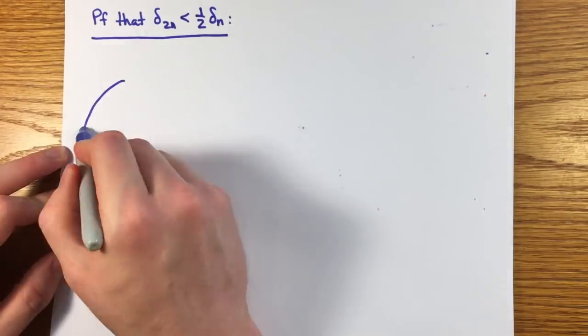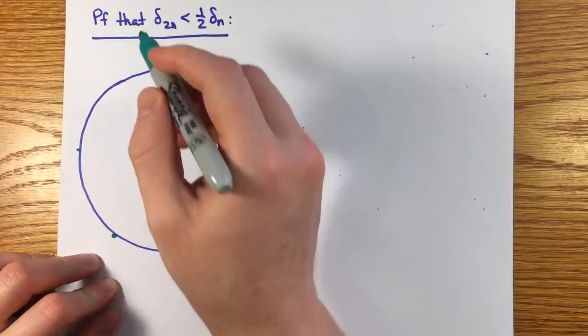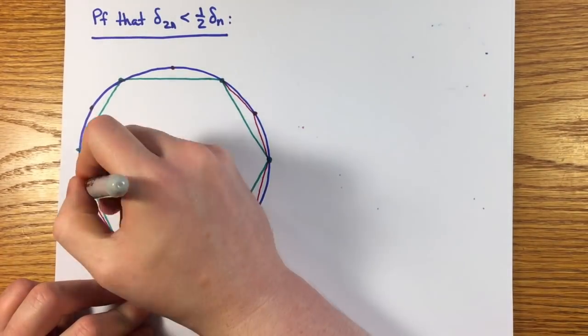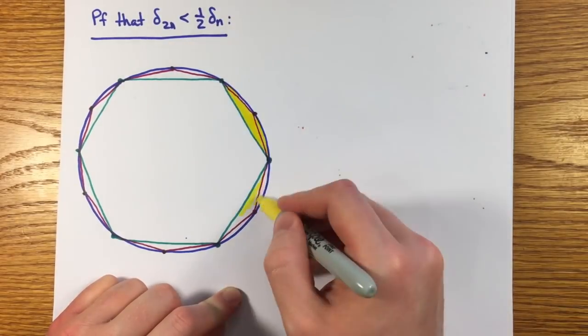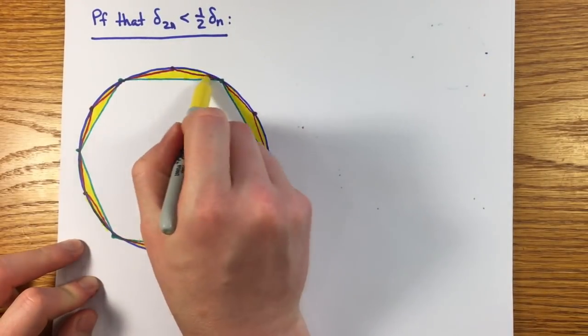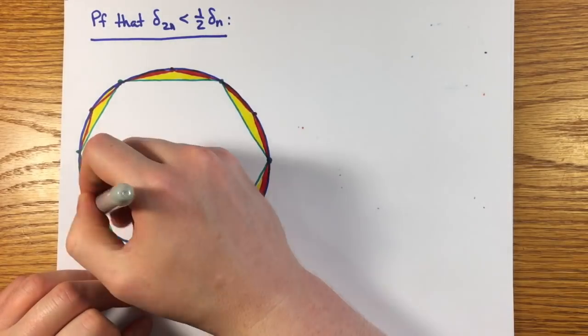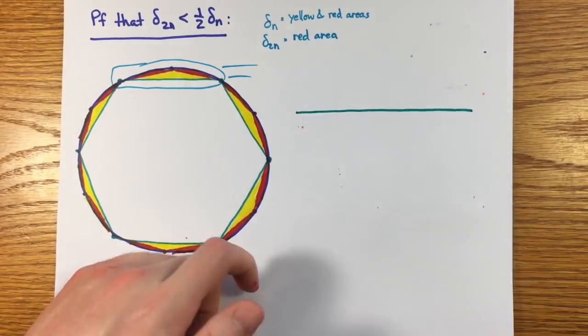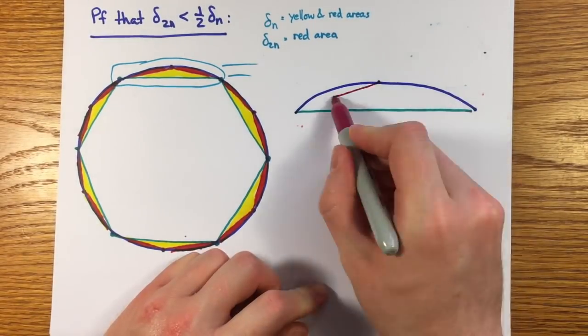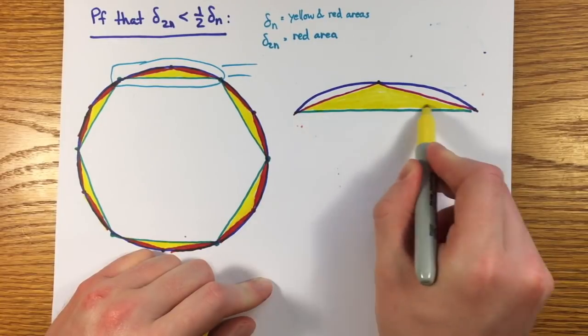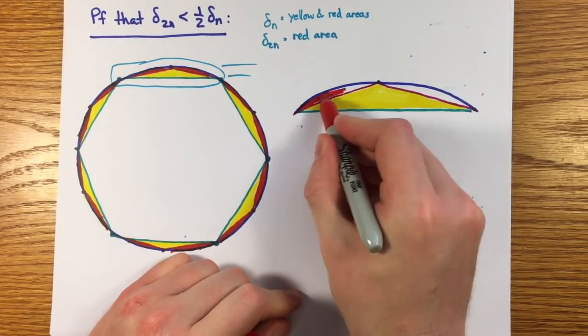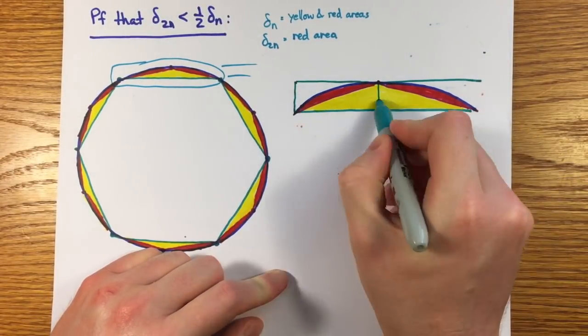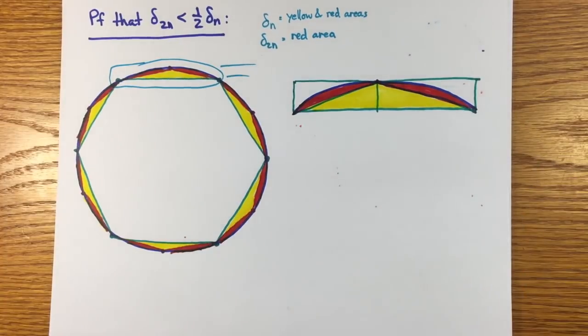So how do you show that delta of 2 n is less than one half delta n? This is all geometry. You take i n and you add midpoints. I've drawn a hexagon and a dodecagon. And here you see the areas that represent delta 2 n in red and delta n being both the red and the yellow. Now zoom in on one of the bisected regions. Why is this excess area less than half of the area of this region, the region in yellow and red, called the segment of the circle?